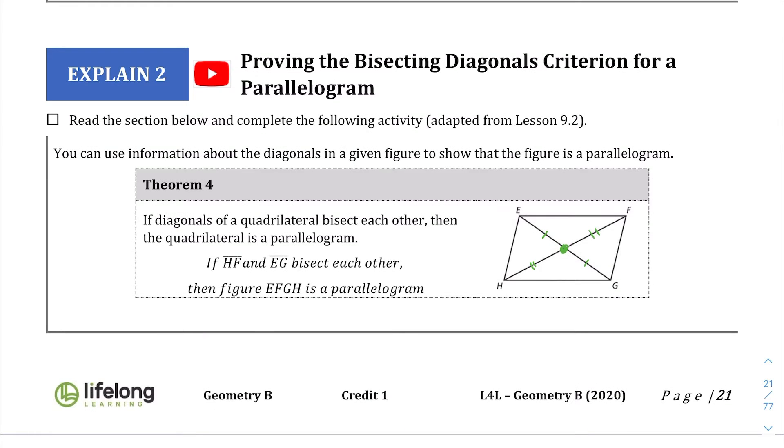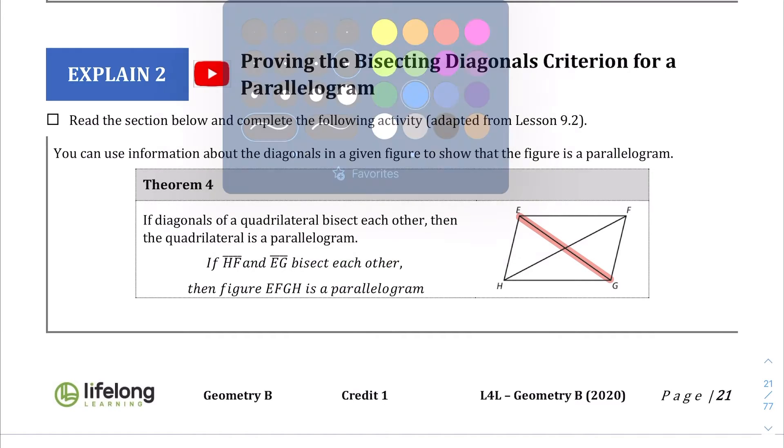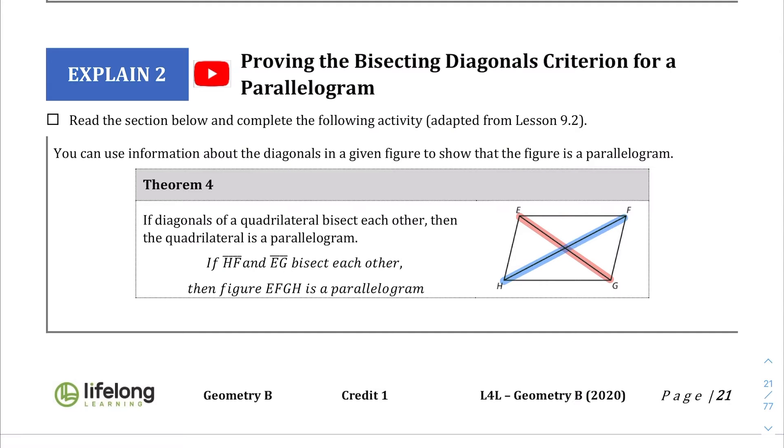Theorem 4 says that if the diagonals bisect each other—I've drawn this from a previous lesson, but let me draw it again. If the diagonals bisect each other, so if this line here and this line here, if they intersect at that middle point right here, and they create equal links, so this is equal to this and this is equal to this, then you have a parallelogram. So those are the four theorems that are being covered in this particular lesson.